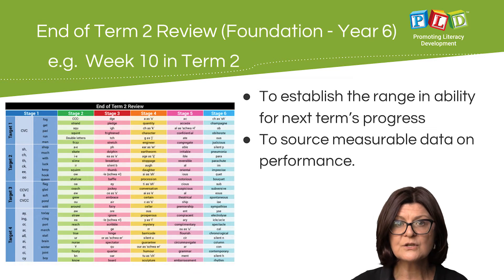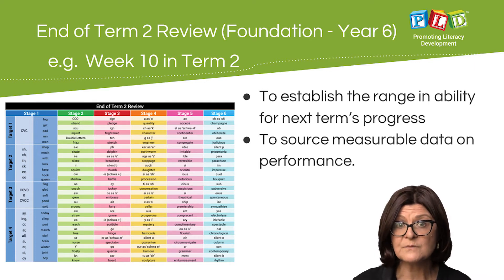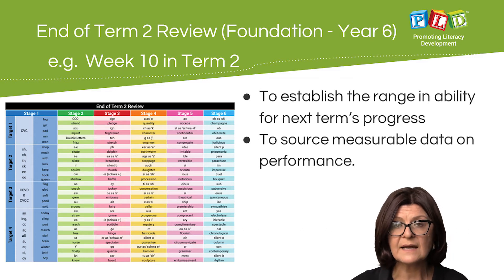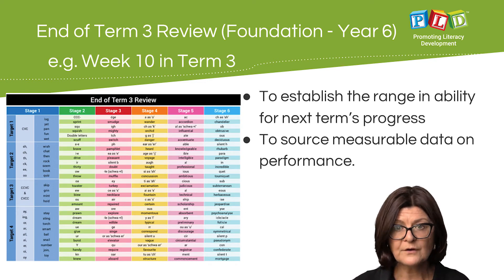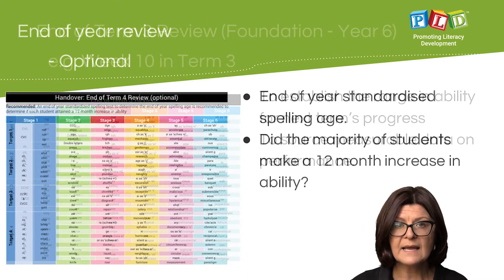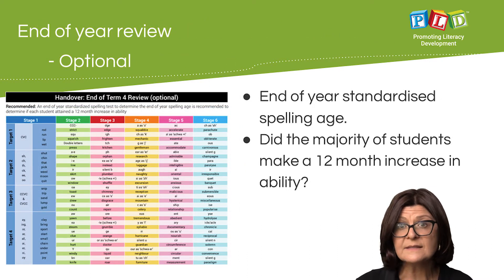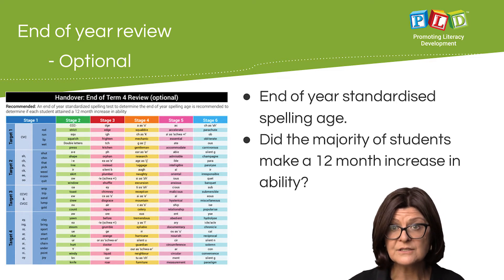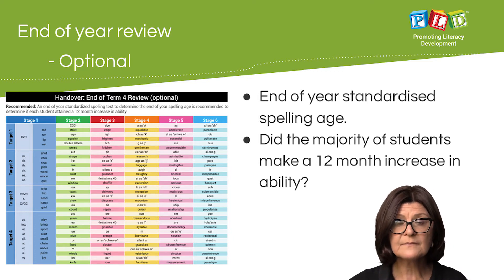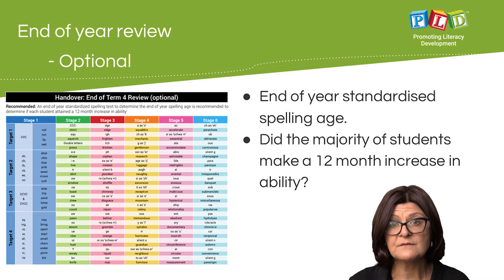There is also an end of Term 2 review for Foundation to Year 6, because by the end of Term 2 young students should be at least starting to spell CVC words, as well as an end of Term 3 review setting the focus for the Term 4 process. The end of year review is provided but is optional. What is recommended at the end of the year is an end-of-year standardized spelling assessment to establish a spelling age, percentile rankings, and to confirm whether the majority of students made at least a 12-month increase in ability.